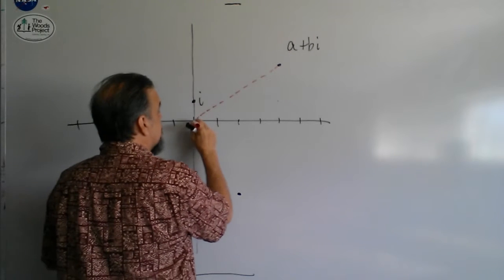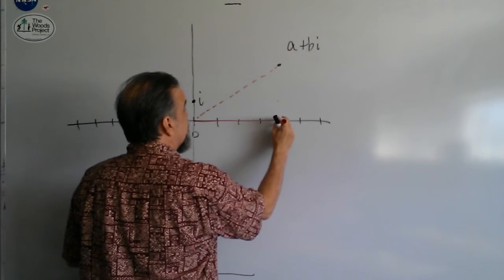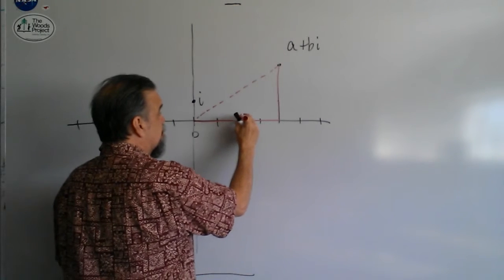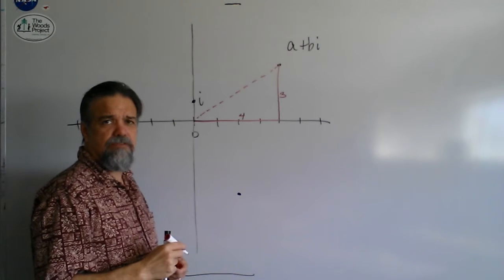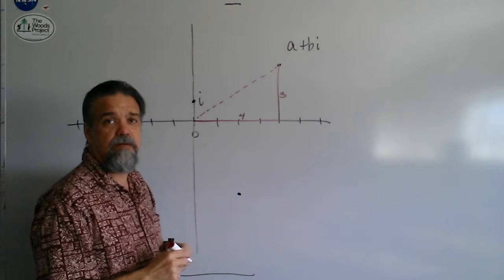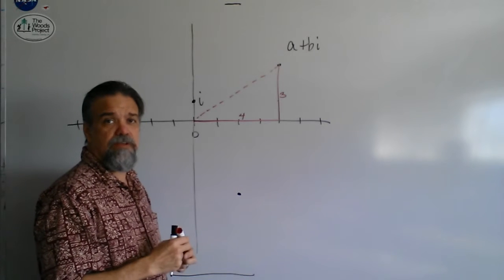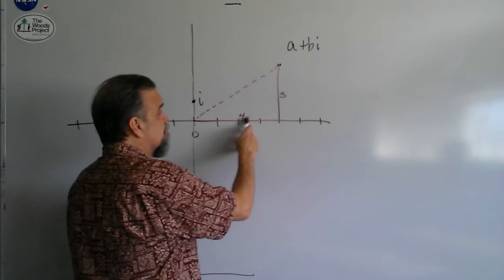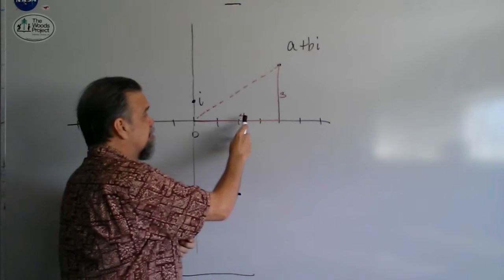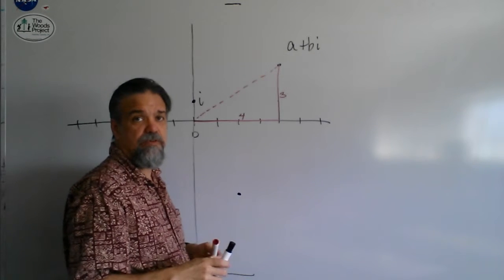I say, I'm going to draw a triangle that looks like this, and my triangle is going to be 4 on this side, and 3 on this side. Where did I get those numbers 4 and 3? Because this is the number 4 plus 3i. And now, from the Pythagorean theorem, I know that 4 squared plus 3 squared is this distance squared, and 4 squared is 16, 3 squared is 9, 16 plus 9 is 25.